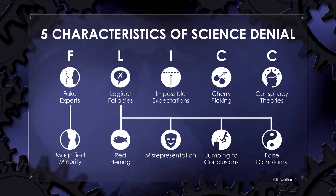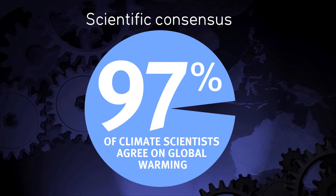There is also a chart which includes some subcategories. Below fake experts, there is a magnified minority, where often the same handful of contrarians get cited. And there are several logical fallacies — you'll often find red herrings, which are there to distract, misrepresentations where what somebody said gets mangled beyond recognition, jumping to conclusions, and false dichotomies where everything is either black or white, but never grey.